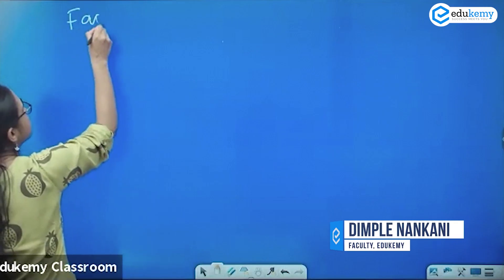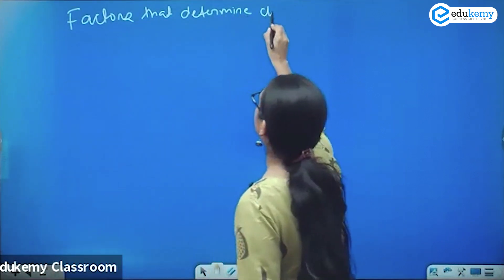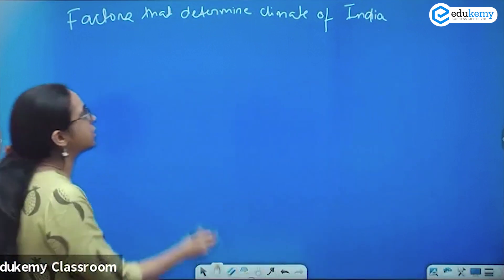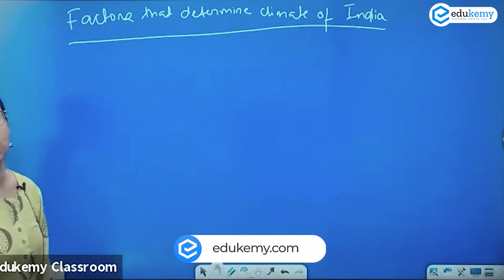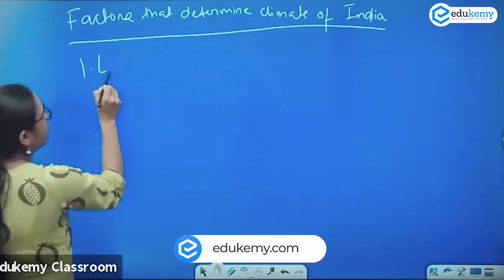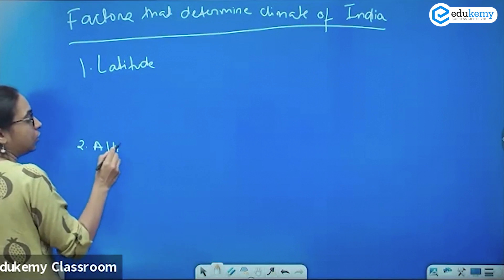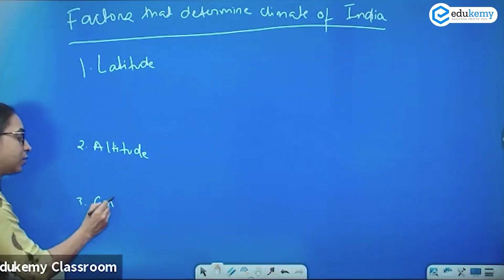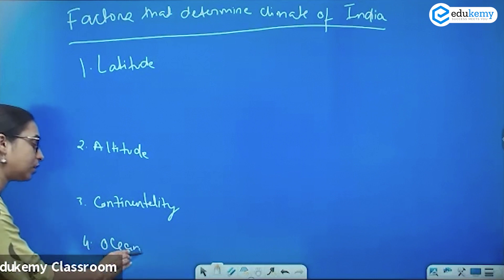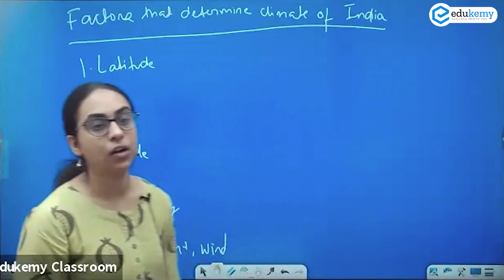What are the factors that determine the climate of India, or the climate of any place? The factors that determine the climate of any place include location, which influences sun rays. One factor would be latitude, another would be altitude. There is also continentality, ocean currents, and winds. Let's start with latitude.